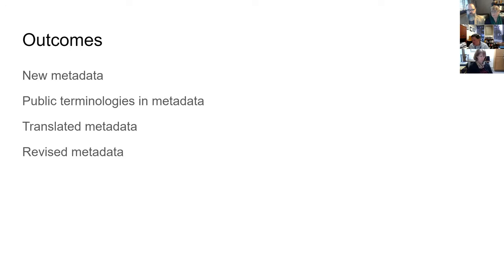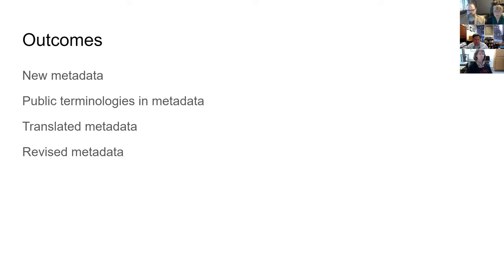We also realized this would be useful for translating metadata — if you have material that's all in English and you'd like it translated into Spanish, it might be reasonable to say: here are the same fields, please provide the Spanish for these. And finally, revising metadata — there are lots of archives conferences that talk about addressing archival description done 100 years ago that embodied ways of talking about people that we don't like to use now, particularly about Indigenous people or other underrepresented groups. Being able to use a feature to enable revision of existing metadata is another big piece of this.